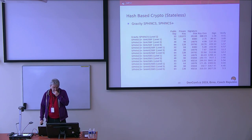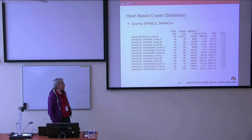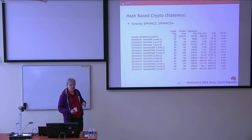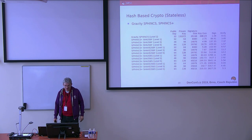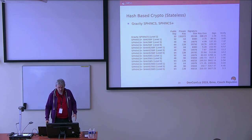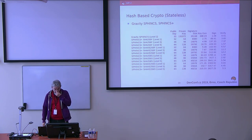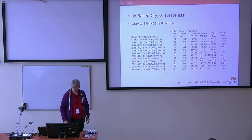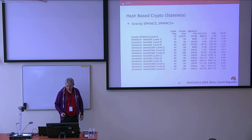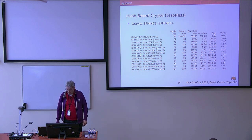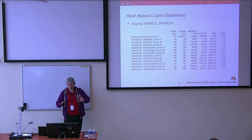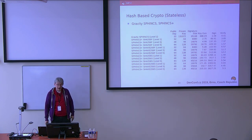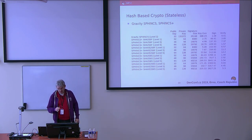Here are the systems proposed for hash-based crypto. There are only two proposals, and because there were only two, I was able to list all the flavors available. The public key sizes are pretty reasonable — 32 to 64 bytes, which is smaller than RSA. But the signature sizes are on the order of 10,000 bytes, and signing times can be fairly long — up to half a second, some even over a second. So it's somewhat heavyweight in terms of signature size and signing time, but there may be operations that can deal with that.